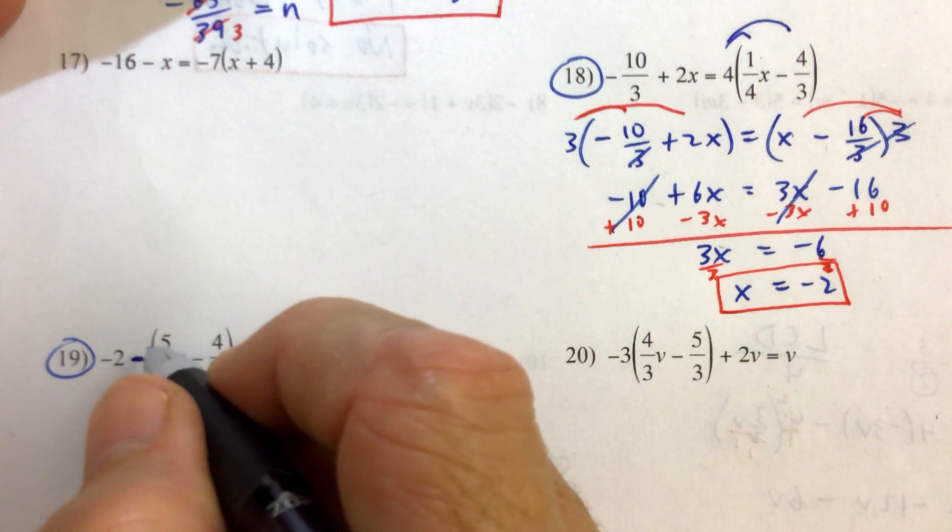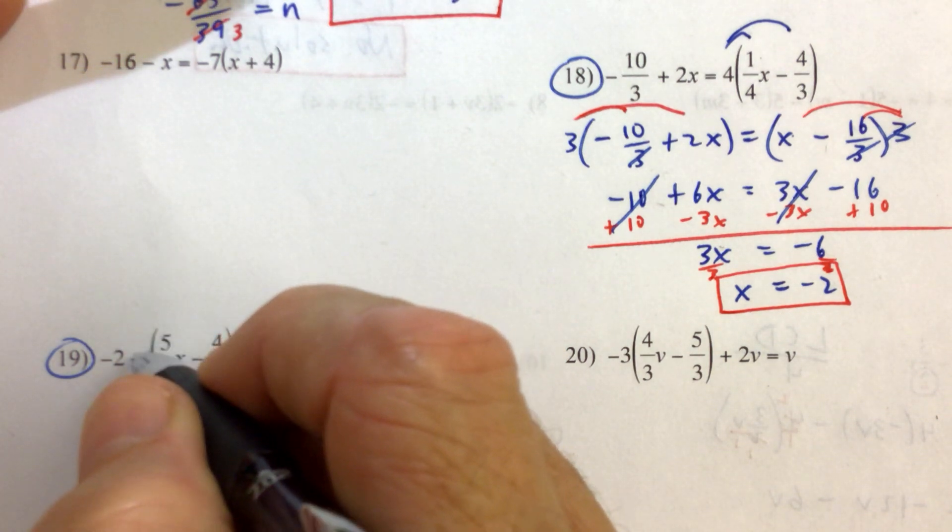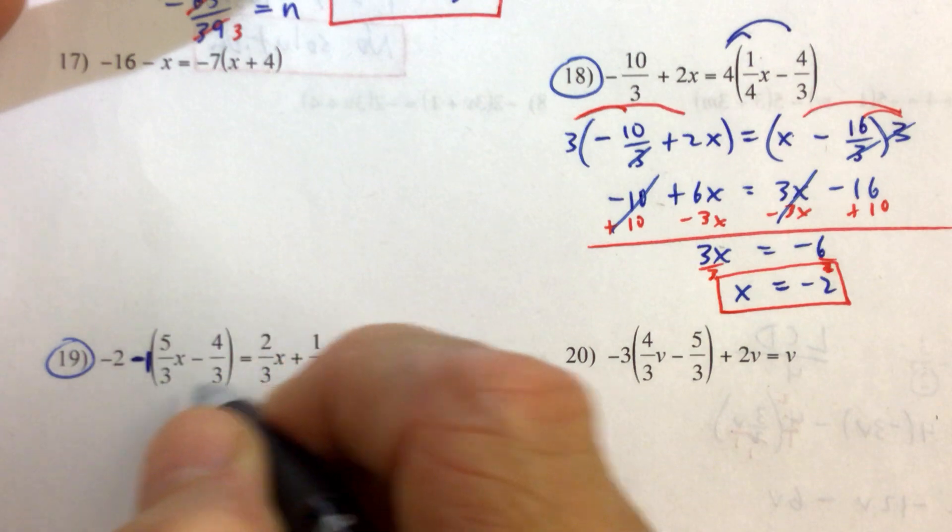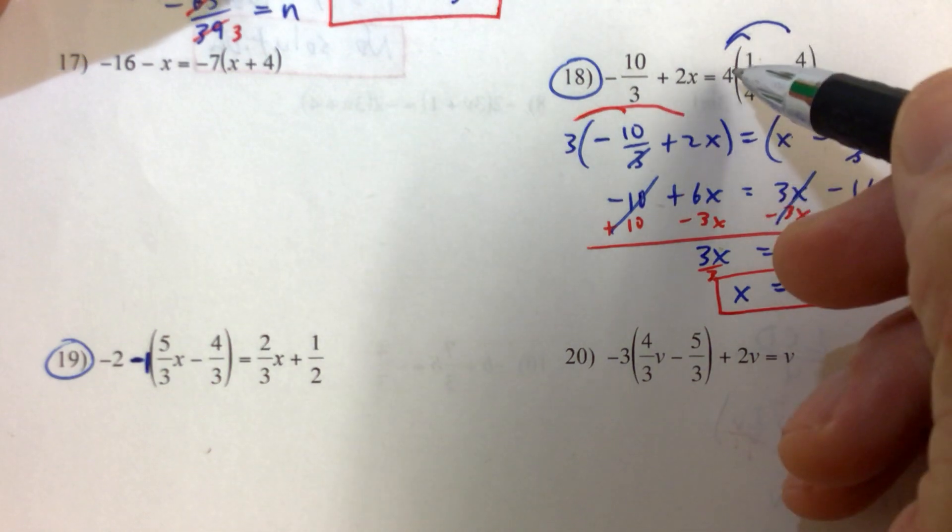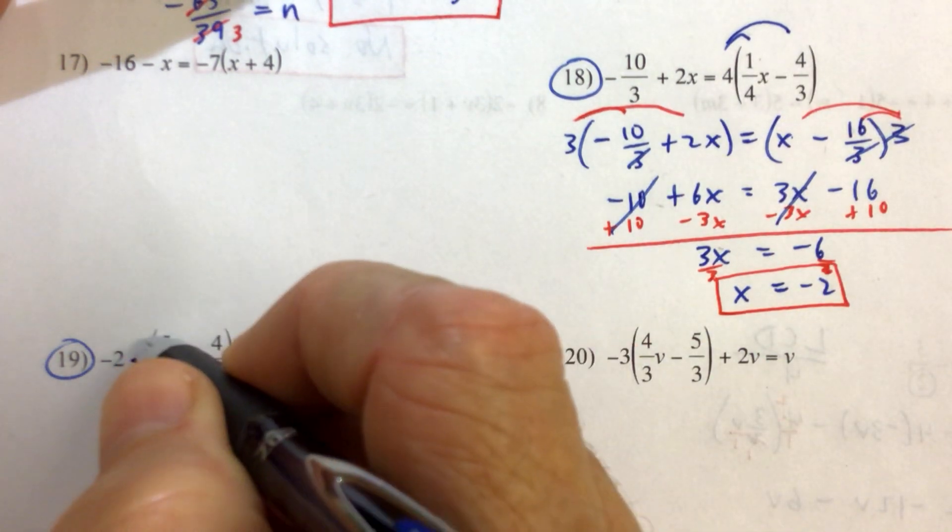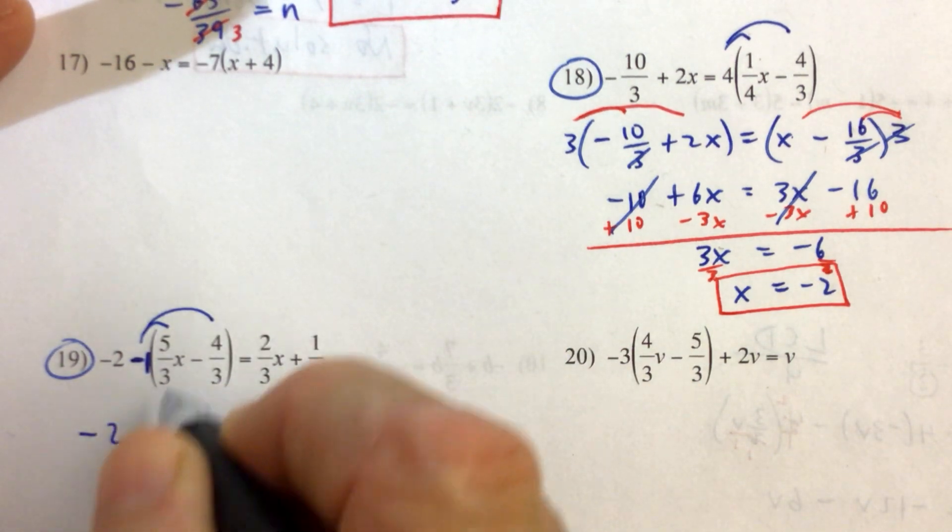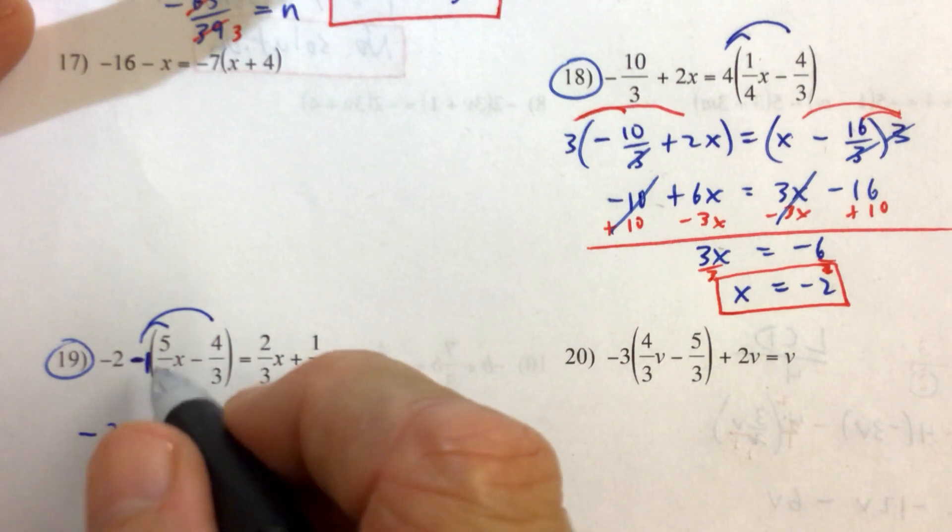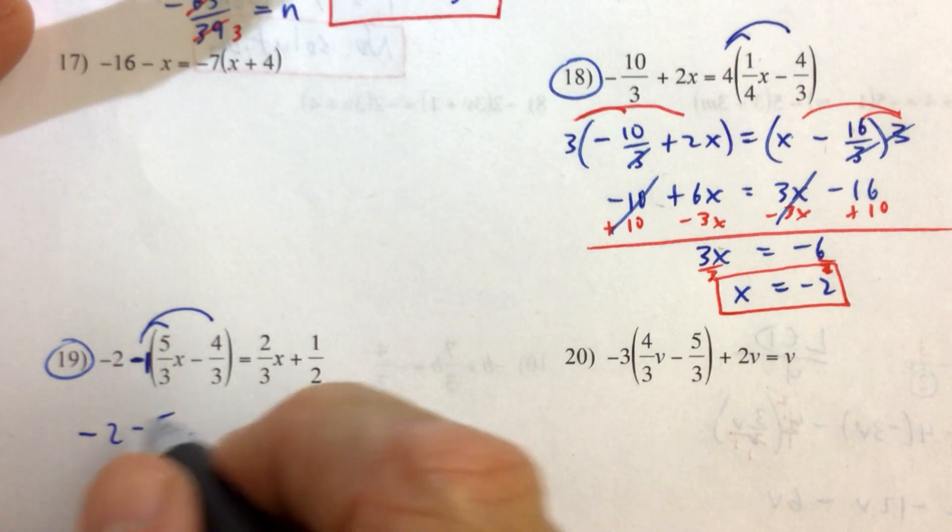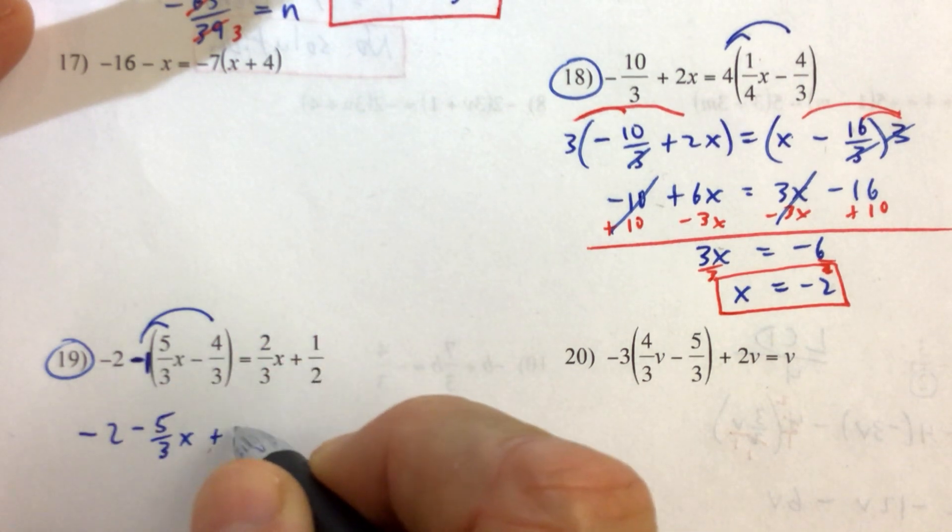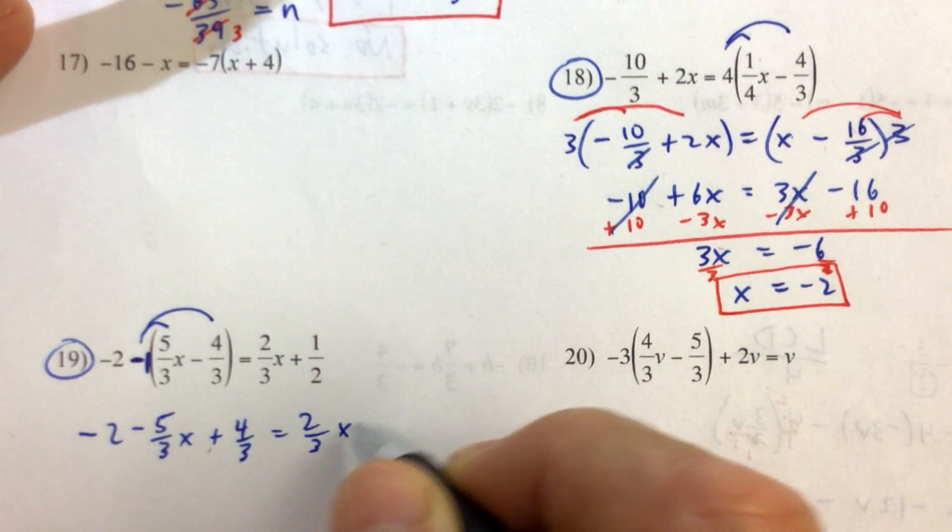Sometimes I find students see this better if you can just insert a 1 right there. So when you have a minus sign in front of a set of parentheses, just like you distribute any other number, like we distributed a 4, we're distributing a negative 1 to both terms. That means we just change the signs of each of the terms inside the parentheses. Negative 1 times 5/3 x is negative 5/3 x. Negative times a negative is a positive 4/3.